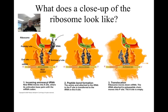The P site, or peptidyl site, is where the growing amino acid chain is kept until it is transferred to the tRNA in the A site. The E site, or exit site, is where the empty tRNA molecule exits the ribosome.